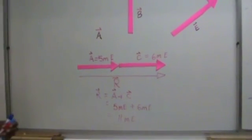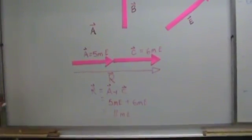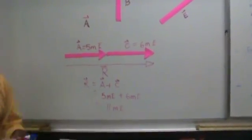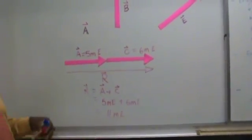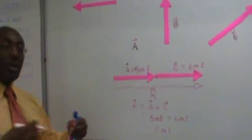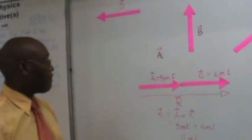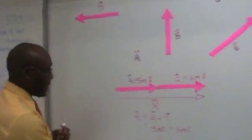So what is this telling us here? That if you have two vectors pointing in the same direction, you can just add the magnitudes of the vectors. Okay, that's it for that example.